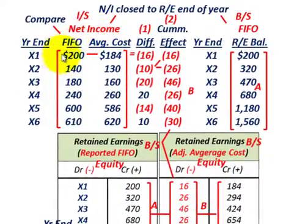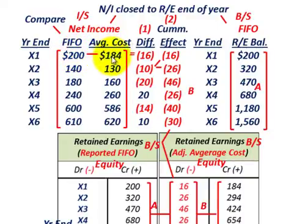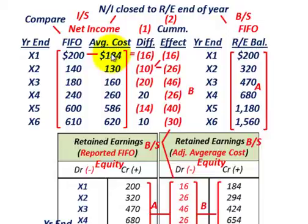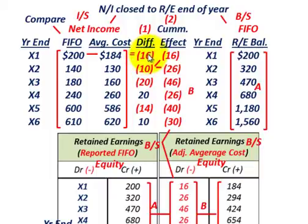For year X1, the FIFO inventory method gives us net income of $200,000. The average cost that we recalculated was $184,000. Comparing FIFO net income to average cost net income, we had a reduction of $16,000 in net income for year X1.